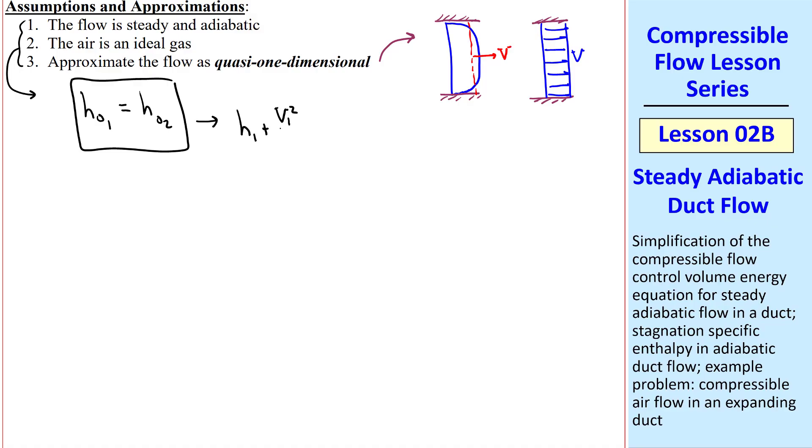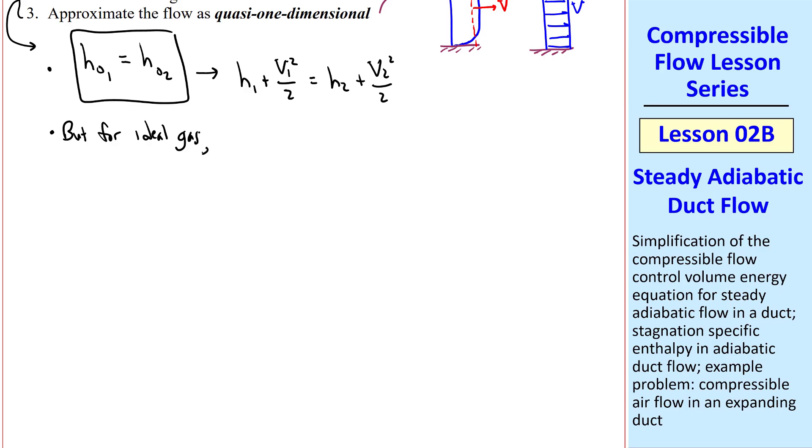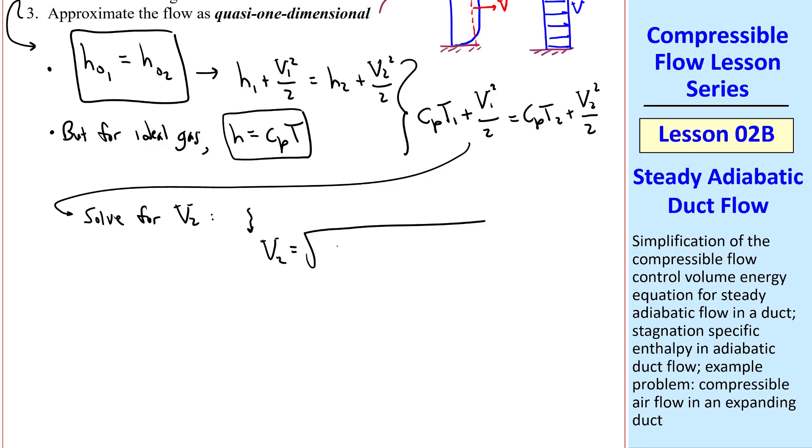H1 plus V1 squared over 2 equal H2 plus V2 squared over 2. But for air, which is an ideal gas, recall that H equals CPT. Thus, we have CPT1 plus V1 squared over 2 equals CPT2 plus V2 squared over 2, which we can solve for our unknown V2. After a little algebra, we get V2 equals square root of V1 squared plus 2CPT1 minus T2.